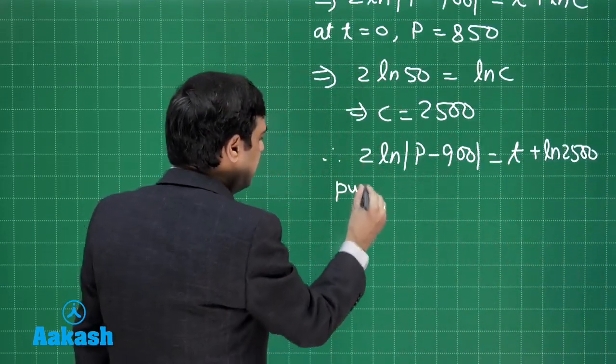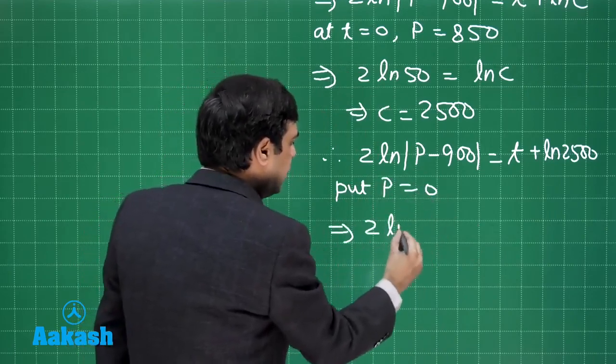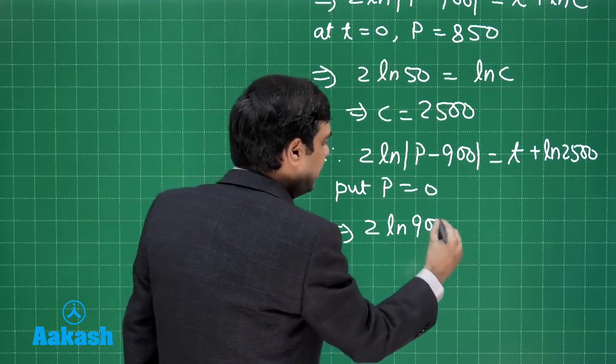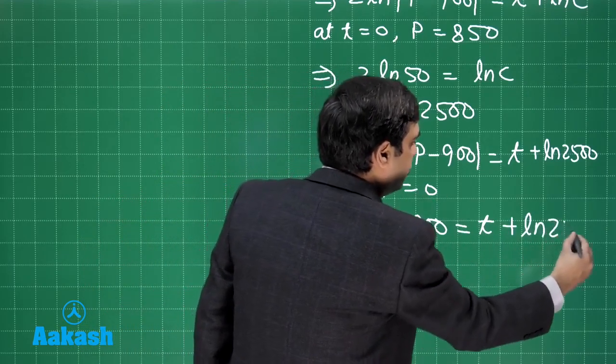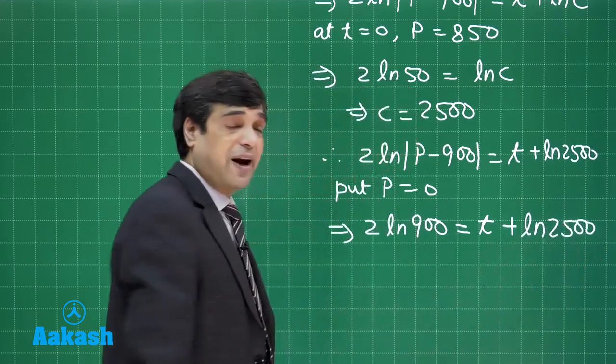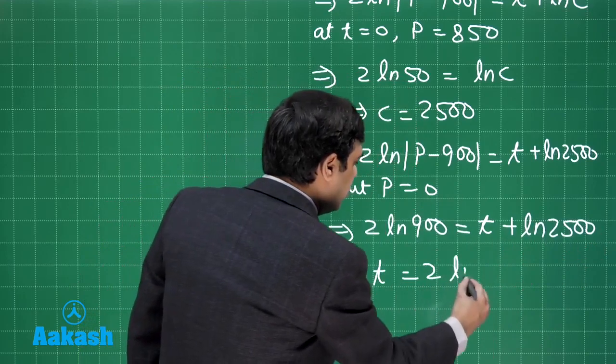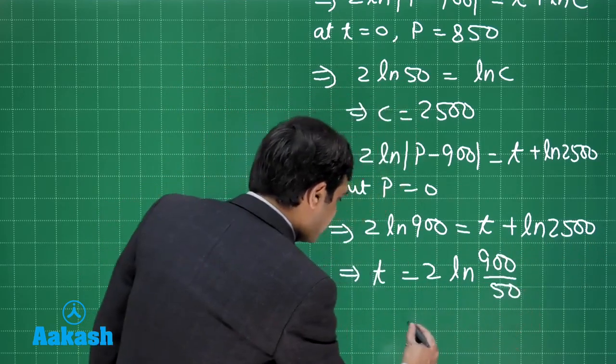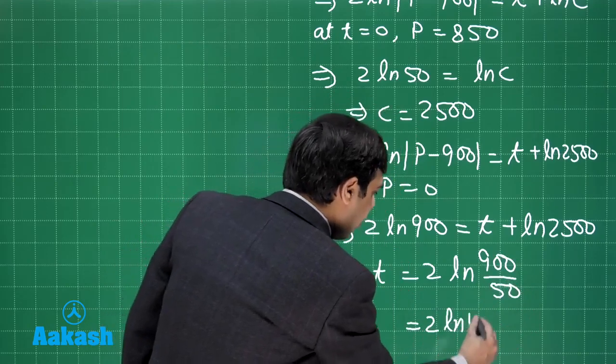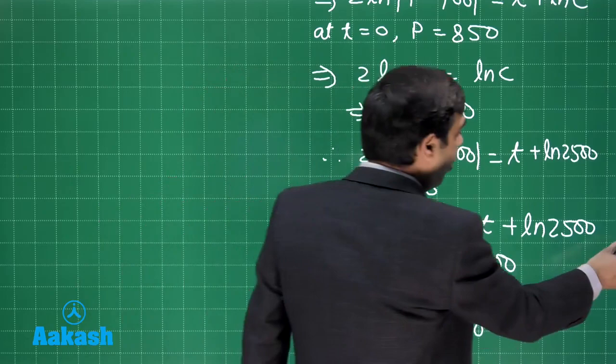So put P equals 0 we get 2 log 900 is equal to t plus log 2500, or you can write simply 2 log 50 that gives us t is equal to 2 log 900 divided by 50 or simply 2 log 18. So the answer obtained time is 2 log 18.